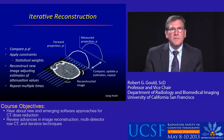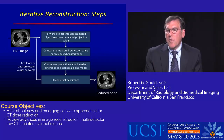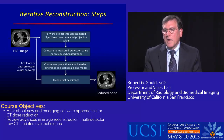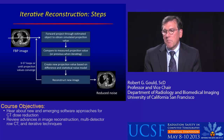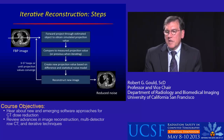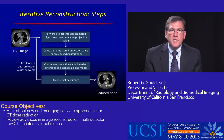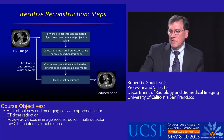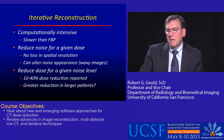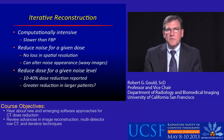Here are the implementation steps: you forward project through the estimated object to obtain simulated projection values. You compare, then adjust the attenuation values, reconstructing a new image, and do the forward projection again — either a finite number of times or until the difference is minimized to a certain extent.